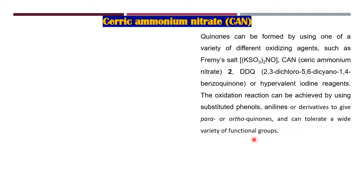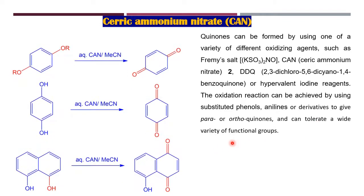Here we have a derivative of anisole where the OR group is an alkyl. In the presence of CAN it undergoes oxidation to give benzoquinol — the phenol unit wherein the para position has another OH. This is the quinol, and undergoing oxidation in presence of CAN gives para-benzoquinol. When we use CAN, this ring will undergo oxidation to give a moiety similar to para-benzoquinol.